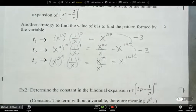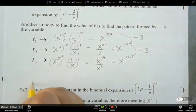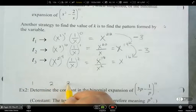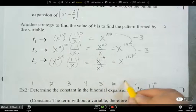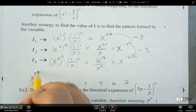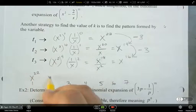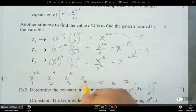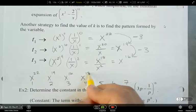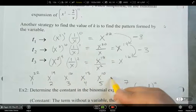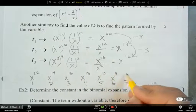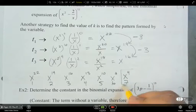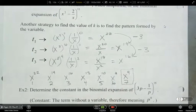So if we didn't want to do what we did before to figure out which term it's going to be, we could simply count it out. So my first term, second term, third, fourth, fifth, sixth, seventh. And I could just continue the pattern starting at x to the power of 22. That's going to be x to the 19, x to the 16th. And my next one is going to be, take away 3 from that power. So just take away 3 from each previous power. And that's going to tell me which term contains the x to the power of 4. So that's another strategy.